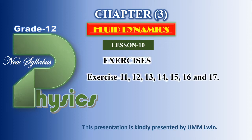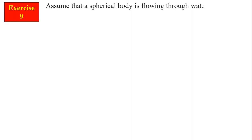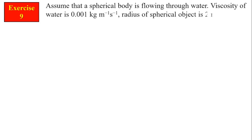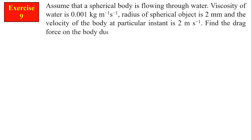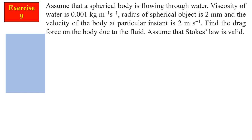A spherical object is going through water. The viscosity of water is 0.001 kg per meter per second. The radius of the spherical object is 2 mm and the velocity of the body at a particular instant is 2 meters per second. Find the drag force on the body due to the fluid.